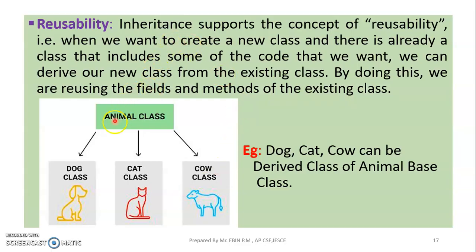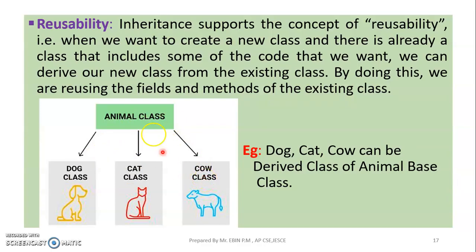This is the inheritance concept. The properties of the Animal class — its general attributes — are inherited by the subclasses such as the Dog class, Cat class, and Cow class. Thank you.